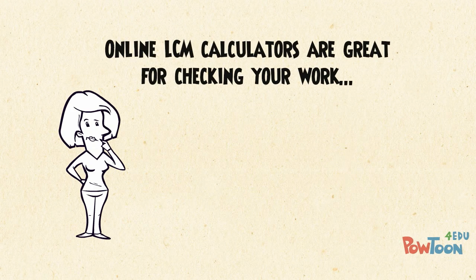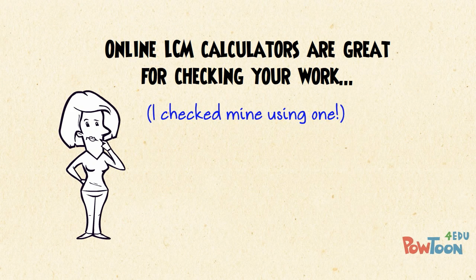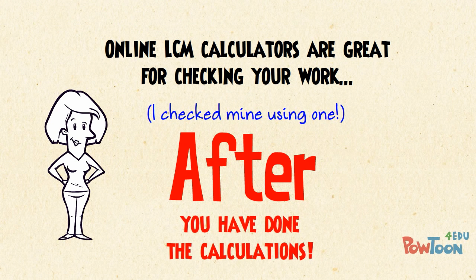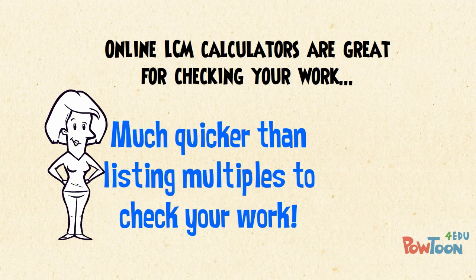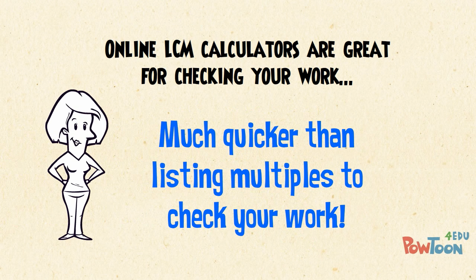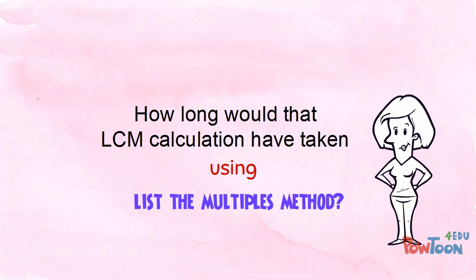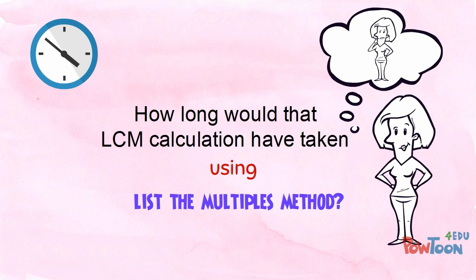There are online LCM calculators which you can use to check your work after you've done the calculations. What can I say? It's much quicker than listing multiples to check your own work. Any guess how long that calculation would have taken if we had tried to use the listing the multiples method? Without the prime factorisation approach, I would have probably given up after about 15 minutes. How about you?